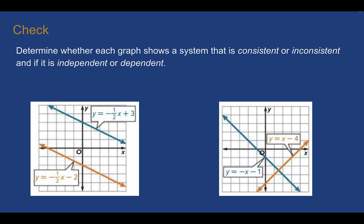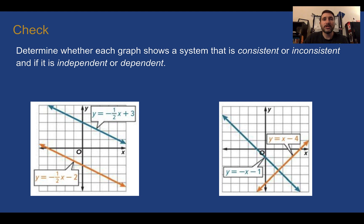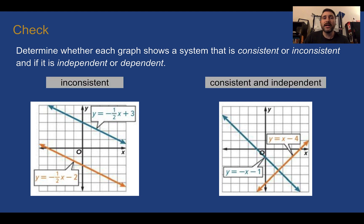Check your understanding: determine whether each graph shows a system that is consistent or inconsistent, and if it is independent or dependent. Pause the video now and complete the check. For the first one, we have parallel lines again — this is an inconsistent system. For the second one, it intersects at one point, so it is consistent and independent.